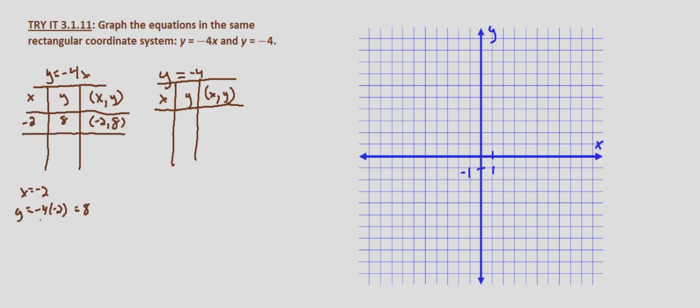Let's say x equals 0. If x equals 0, then y equals negative 4 times 0, which equals 0. So it passes through the origin, giving us the point (0, 0).